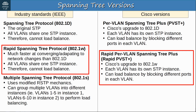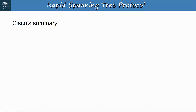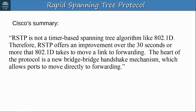The good news is, since you already understand classic STP and PVST+, it will be much easier to learn rapid STP and rapid PVST+ by comparing it to the previous versions. Before getting into the details, here is Cisco's summary of RSTP: RSTP is not a timer-based spanning tree algorithm like 802.1d. Therefore, RSTP offers an improvement over the 30 seconds or more that 802.1d takes to move a link to forwarding. The heart of the protocol is a new bridge-to-bridge handshake mechanism which allows ports to move directly to forwarding.